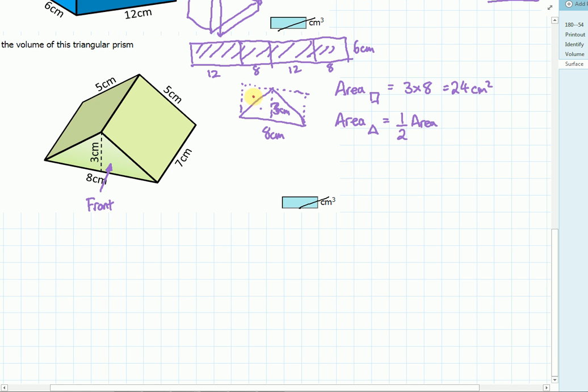This bit is the same as that bit. This bit is the same as that bit. So the area of the rectangle, halved, is twelve centimeters squared. So the front and back is twelve plus twelve, or twenty-four centimeters squared.